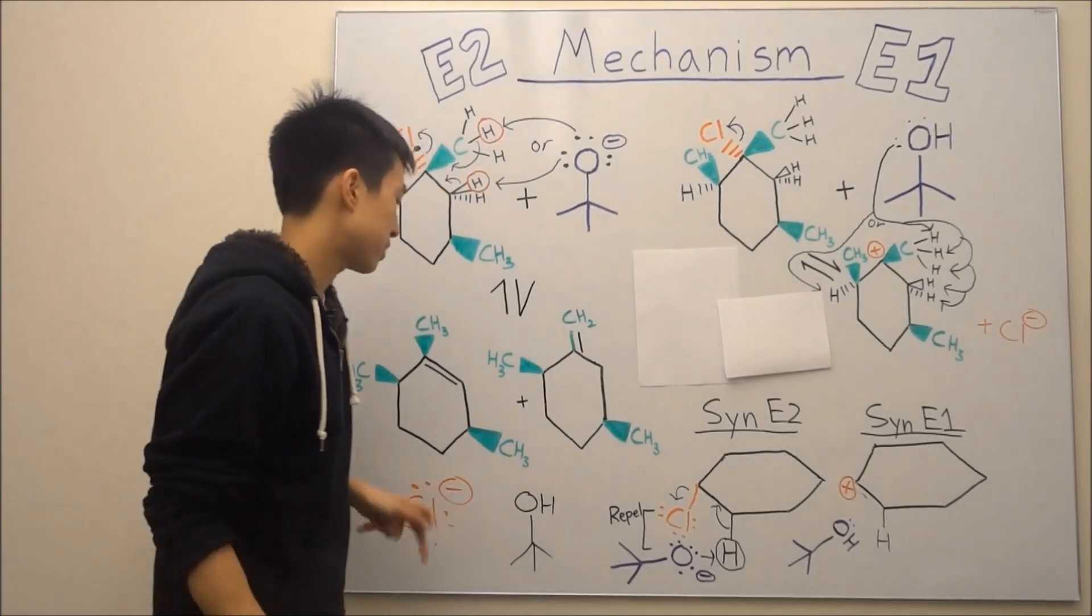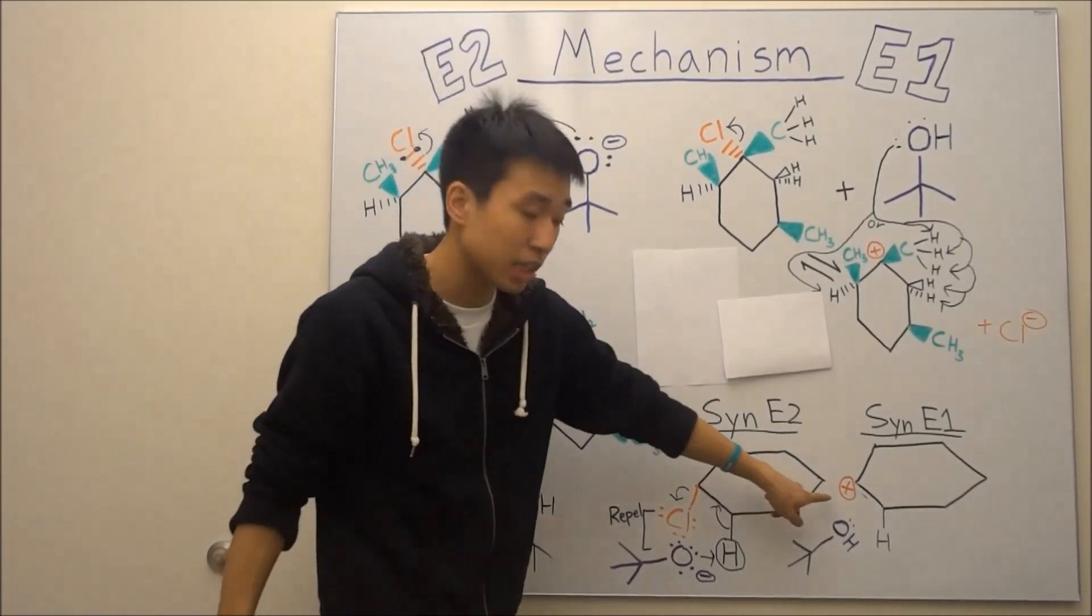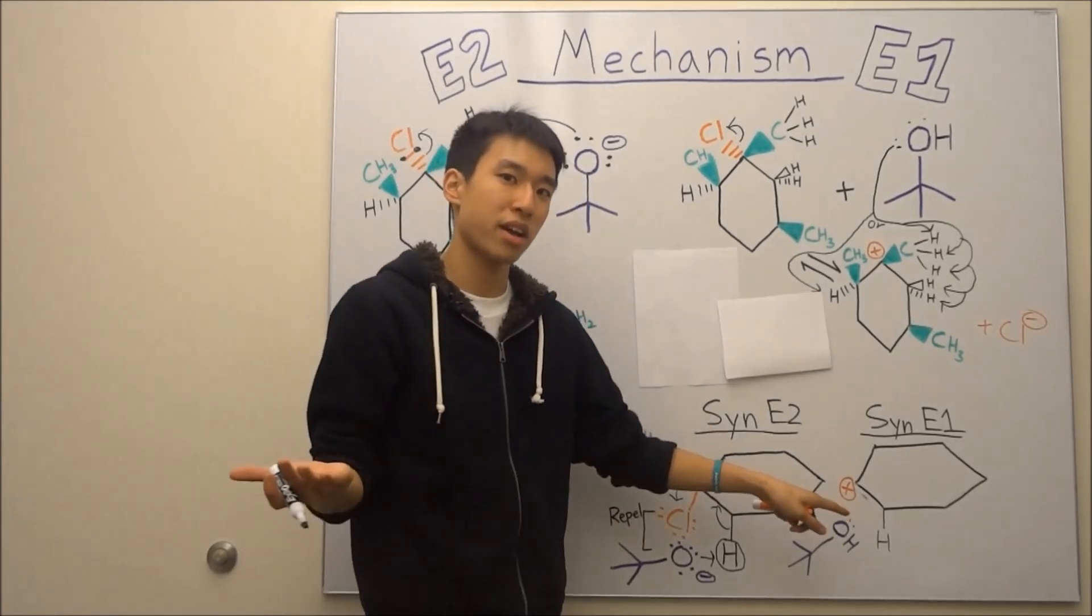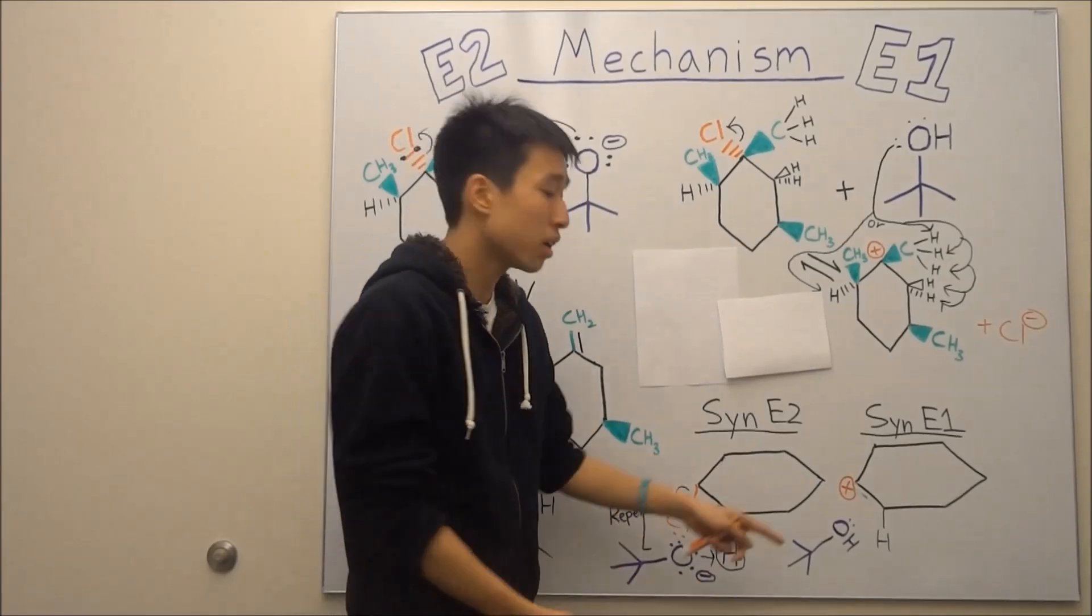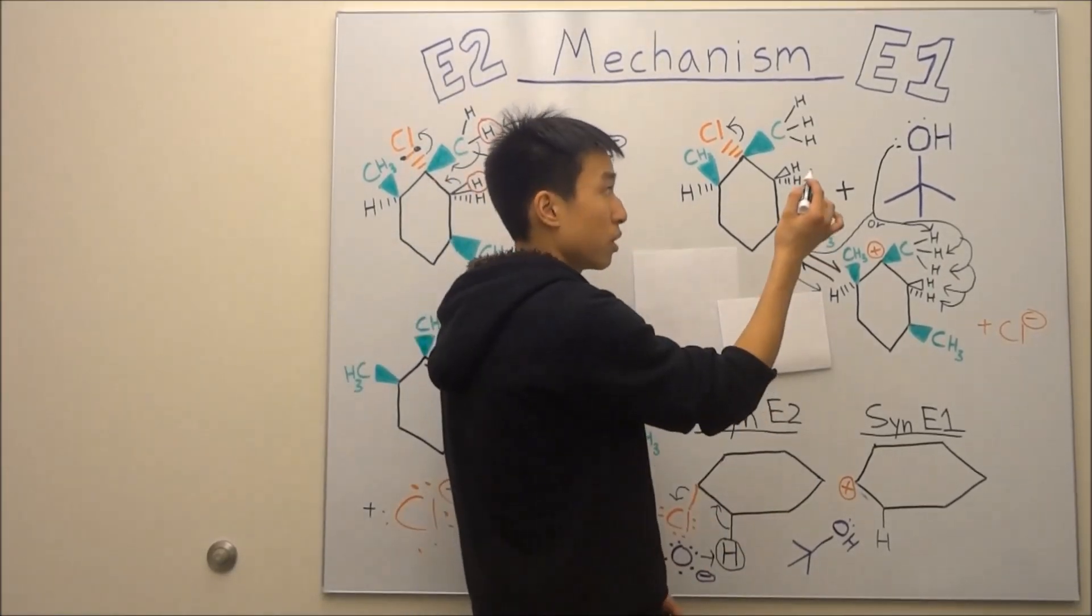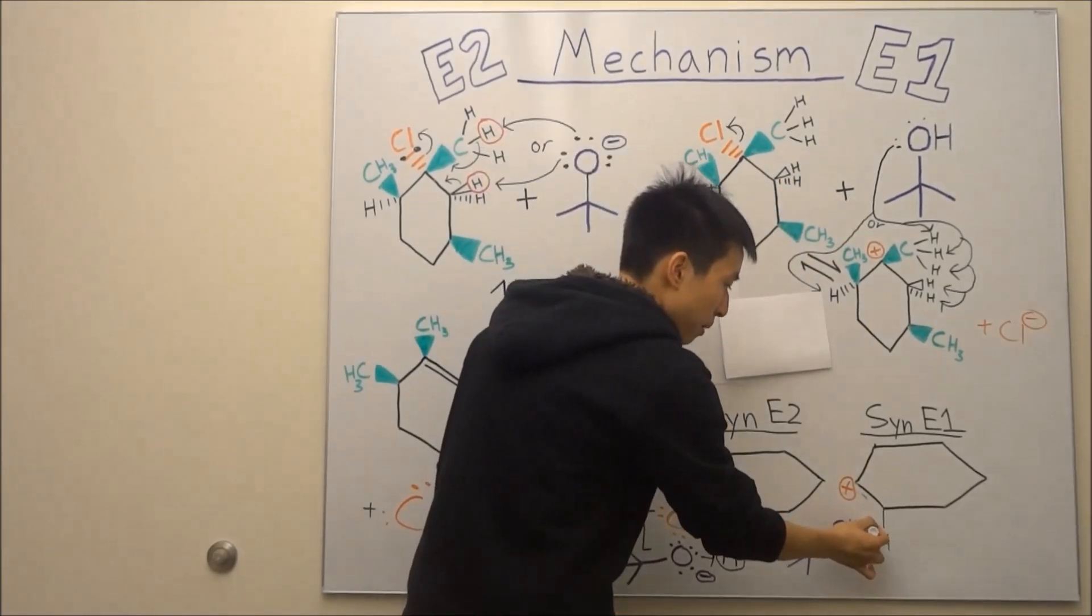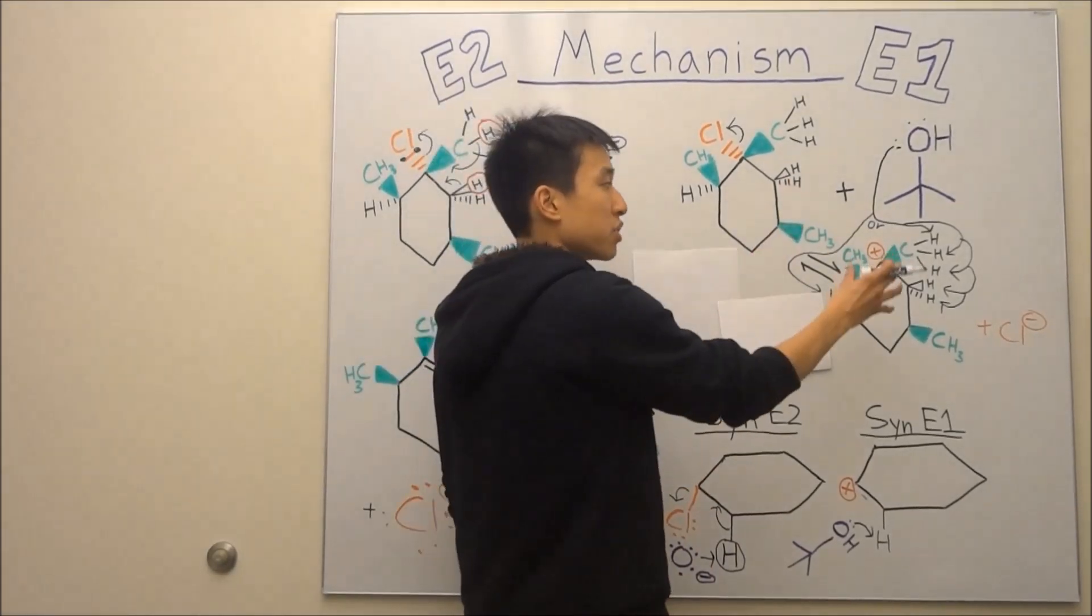You don't need to worry about if it's anti or syn because if you take a look, now instead of having a leaving group here with electrons, we just have a carbocation. It's basically a carbon with no electrons, so there's no repulsive force anymore. So your terbutanol can just grab your hydrogen, perfectly fine. No repulsion force. And then after you grab your hydrogen,